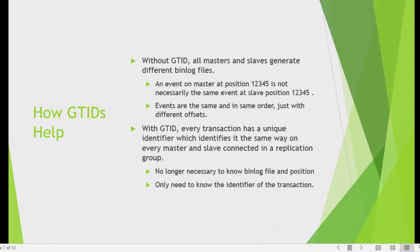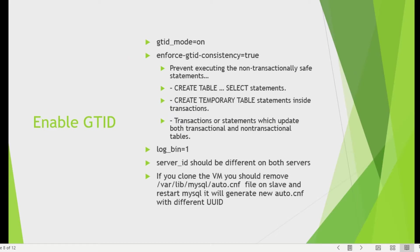Without GTID, all masters and slaves generate different binary log files with different offsets for the same events. Events occur in the same order but at different positions. With GTID, every transaction has a unique identifier that is recognized the same way across all servers in the replication topology, so you no longer need to know the binary log file name or position — only the transaction identifier.